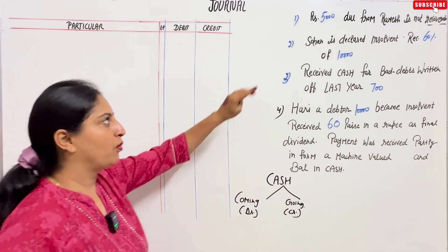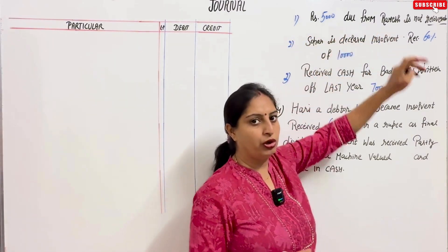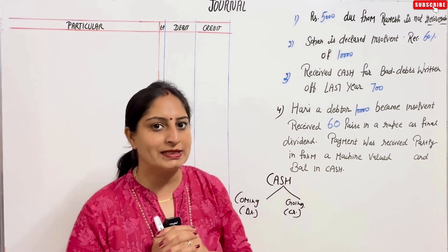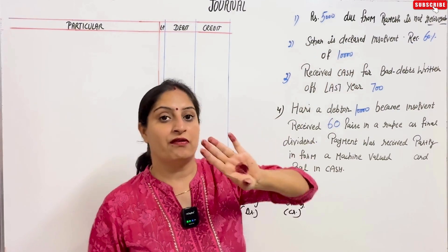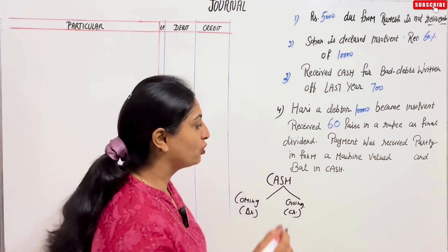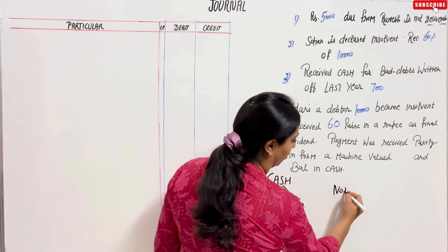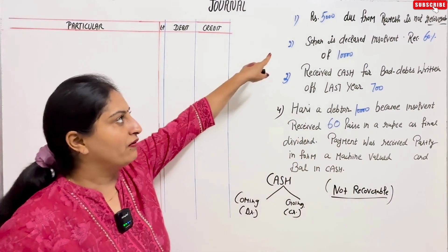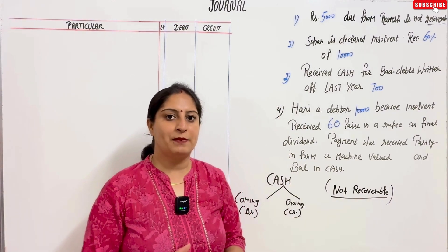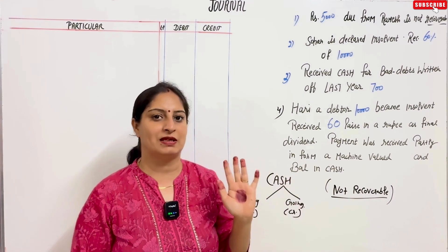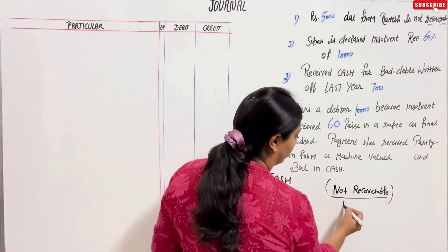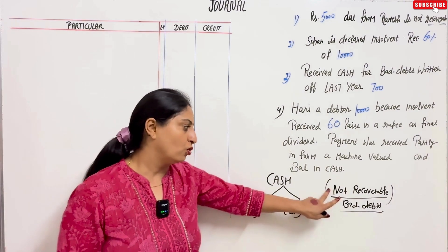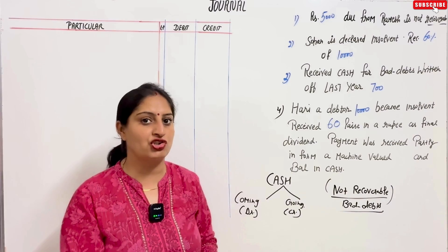Now question 1: Rs. 5,000 due — due means that you had to receive that amount from Ramesh. 'Not recoverable' means what we will not get. When you say 'not recoverable,' that Rs. 5,000 due — like a person in practical life we won't receive payment — that is called bad debts. Bad debts means that amount is not recoverable.